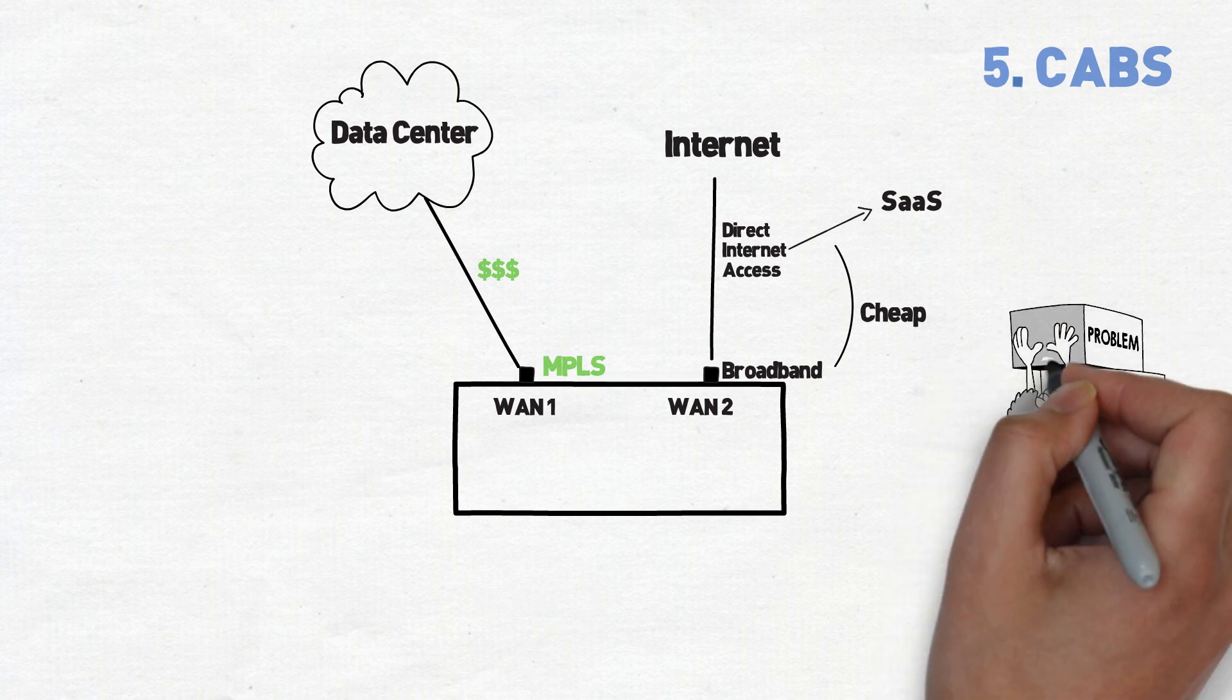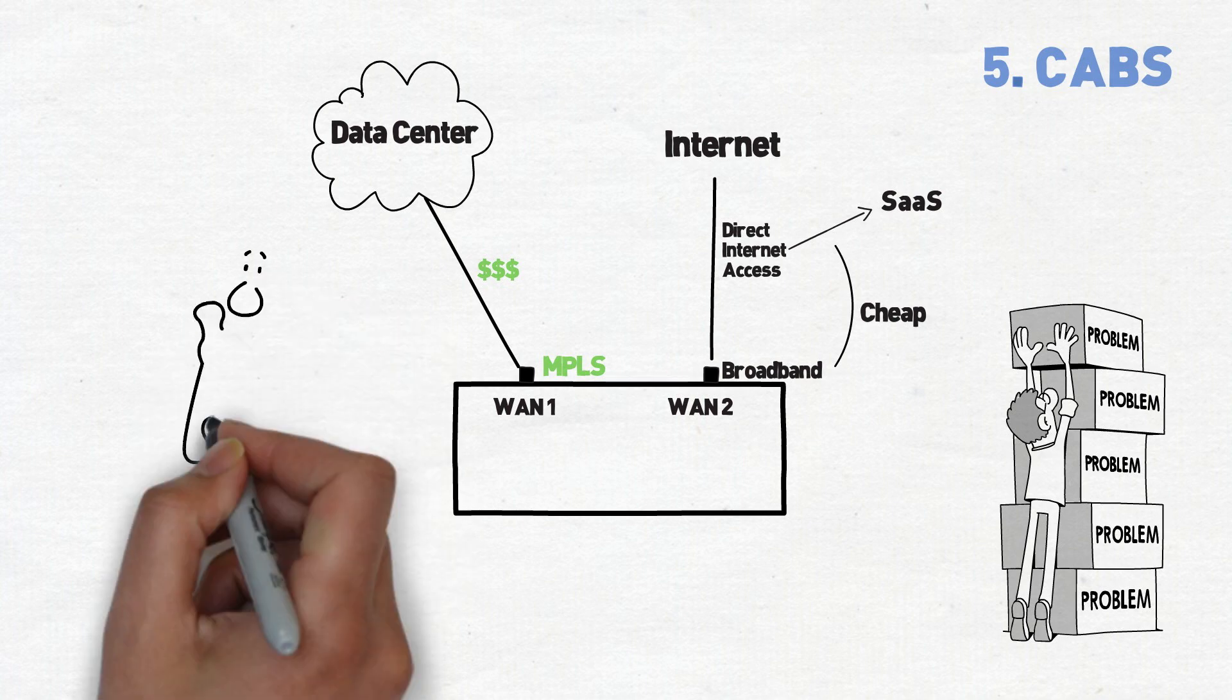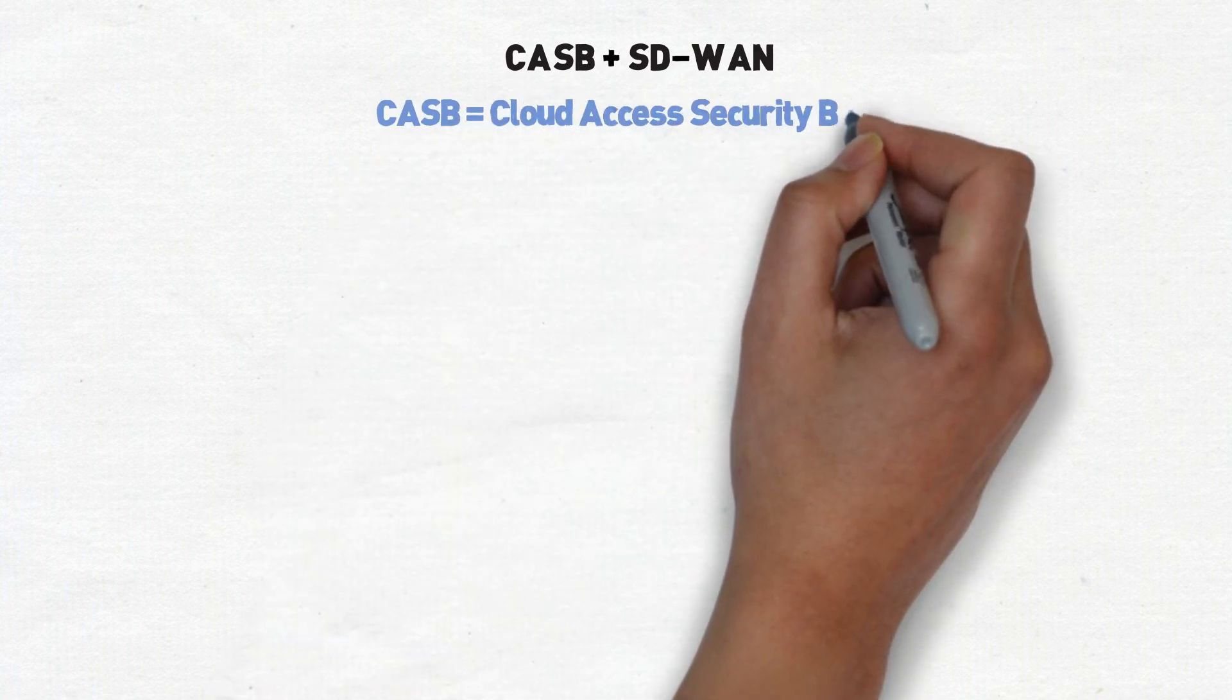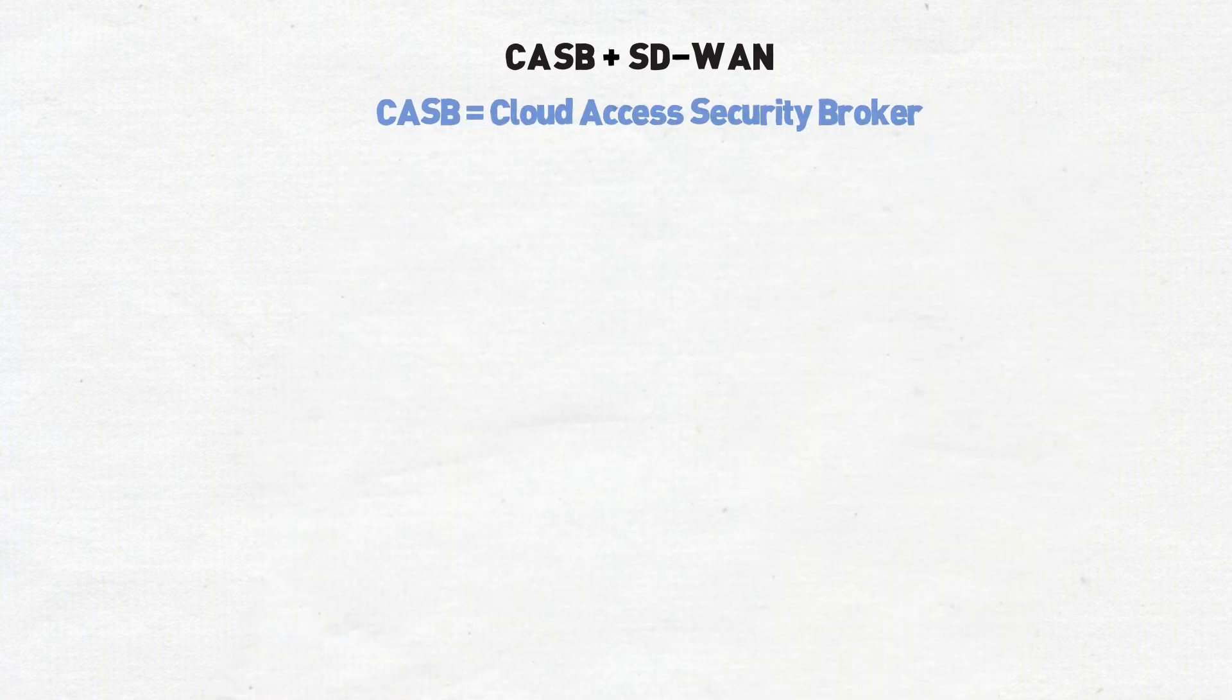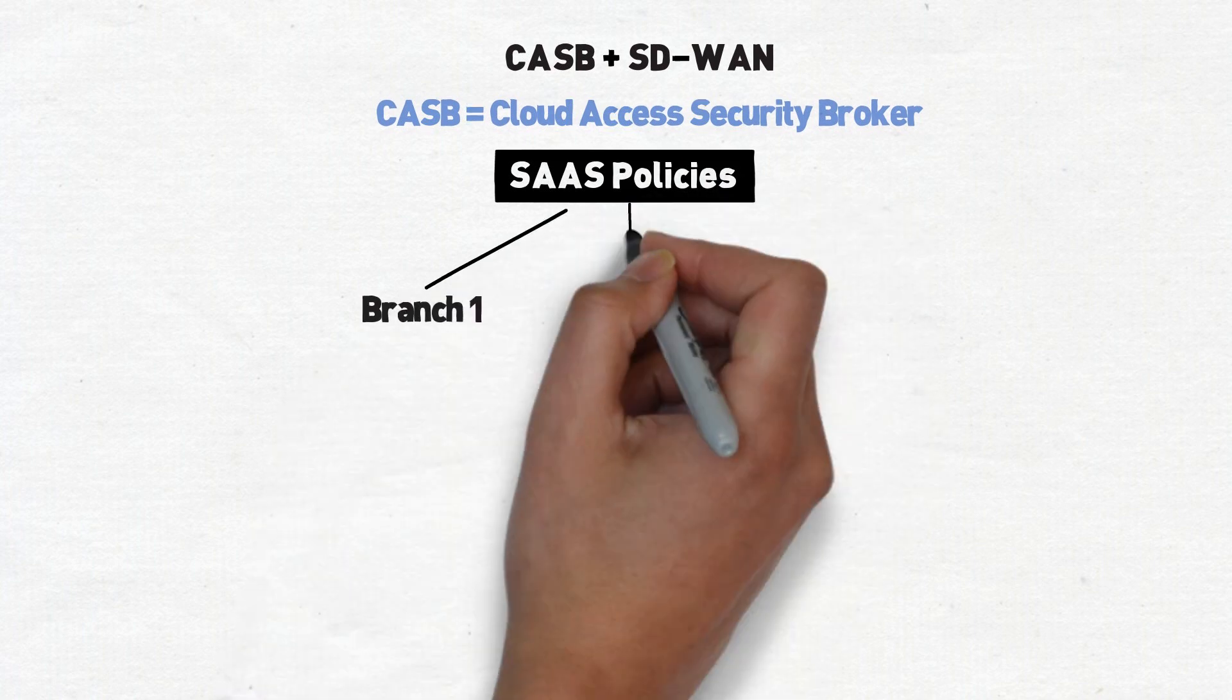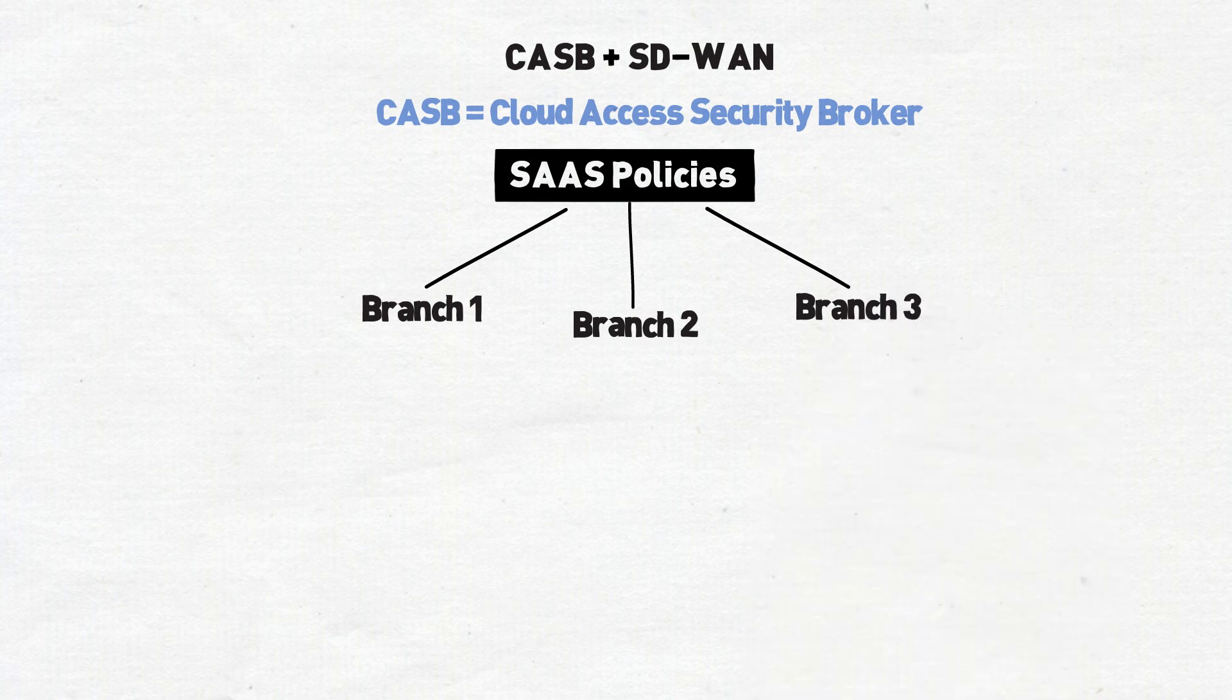This creates a massive problem for security admins as more and more organizations use cloud applications like Salesforce and Office 365 to store sensitive data. So how can we secure and control access to our SaaS applications? One way is to use CASB in combination with our SD-WAN at the branch. CASB stands for Cloud Access Security Brokers and it enforces security and global policies for all of our cloud applications. This means that we can have much greater visibility and policy enforcement to these applications that we couldn't otherwise get with a traditional security appliance.